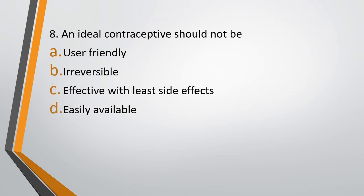Question 8. An ideal contraceptive should not be — Option A: User friendly. Option B: Irreversible. Option C: Effective with least side effects. Option D: Easily available. The correct answer is Option B — it should not be irreversible. That is, an ideal contraceptive should be reversible in nature.